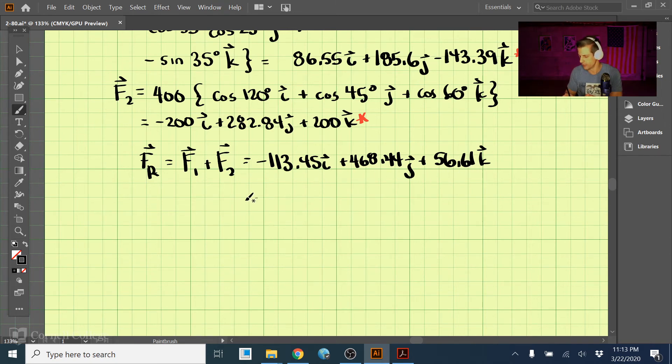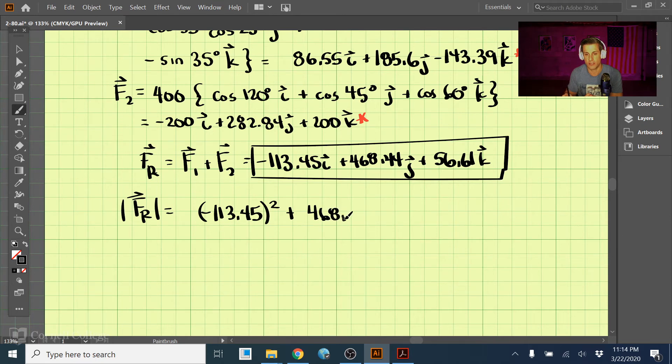For our answer, you probably want to round these to three significant figures. Now we need to figure out the magnitude. So I'm just going to circle this because this is one of our answers as long as it's rounded to three significant figures. So Fr, the magnitude of that, is just the sum of the squares of all these components and taking the square root of that. So we have negative 113.45 squared plus 468.44 squared plus 56.61 squared, and then all of that take the square root of, and our total magnitude then comes out to roughly 485 newtons.